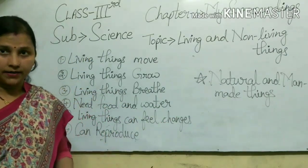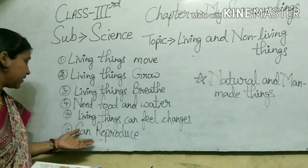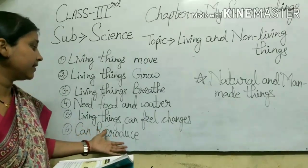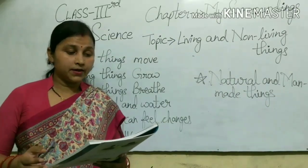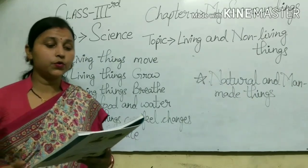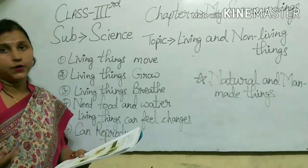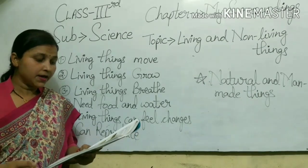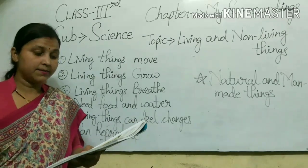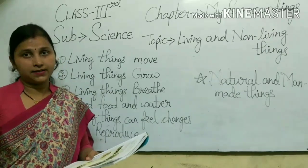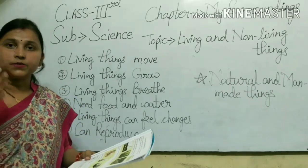The next topic is: living things can reproduce. The process by which living things produce more of their own kind is called reproduction. Plants reproduce, and animals and humans also reproduce — animals by giving birth to babies and by laying eggs.